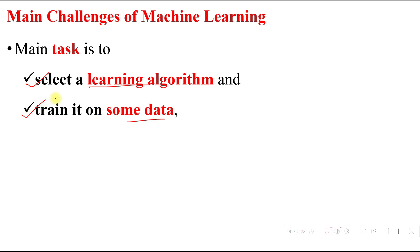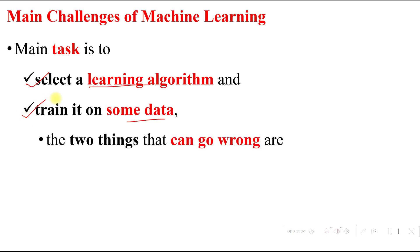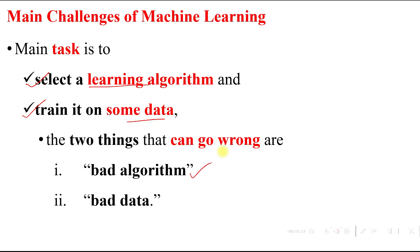So the two things that go wrong are: one is bad data, and the second one is a bad algorithm. Based on these two things, we can get the wrong prediction. So in machine learning, we have to choose the best learning algorithm and some important datasets.